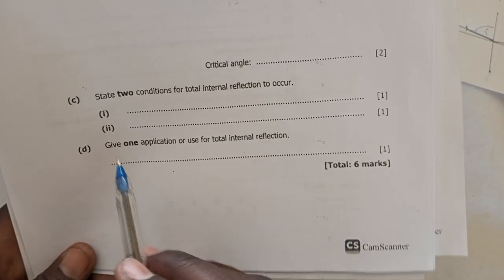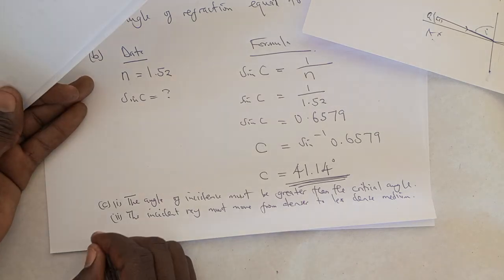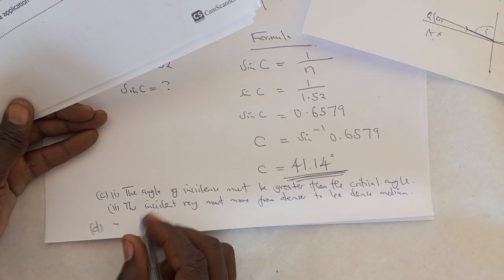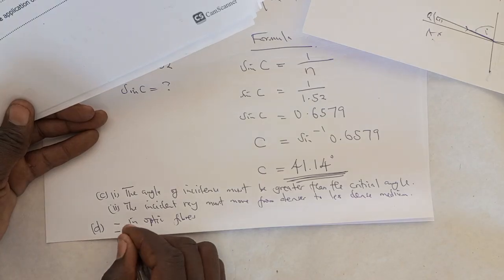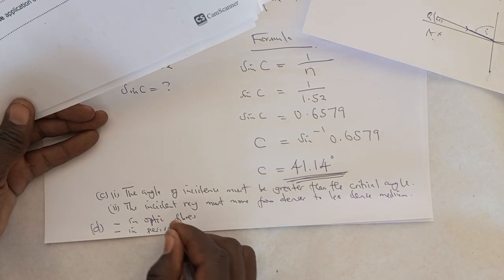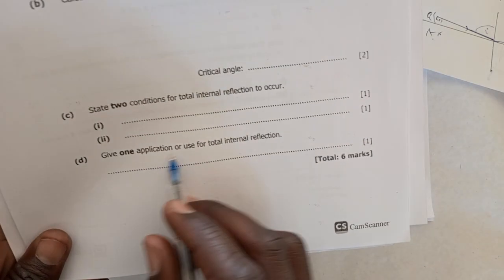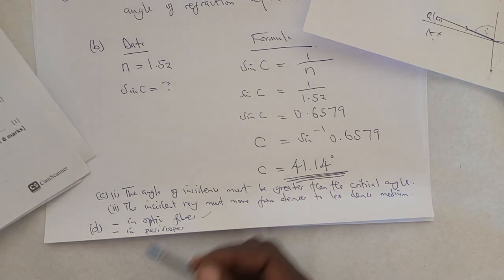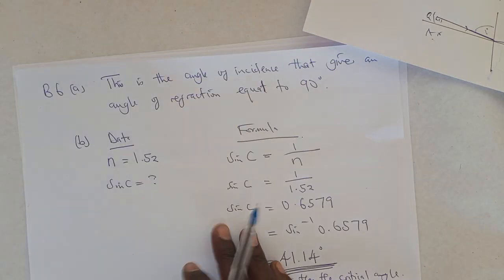The last question asks: give one application or use for total internal reflection. One use is in optic fibers. Another use is in periscopes. Those are the main applications of total internal reflection. You choose whichever one you prefer to answer with. I hope this was helpful — bye bye.